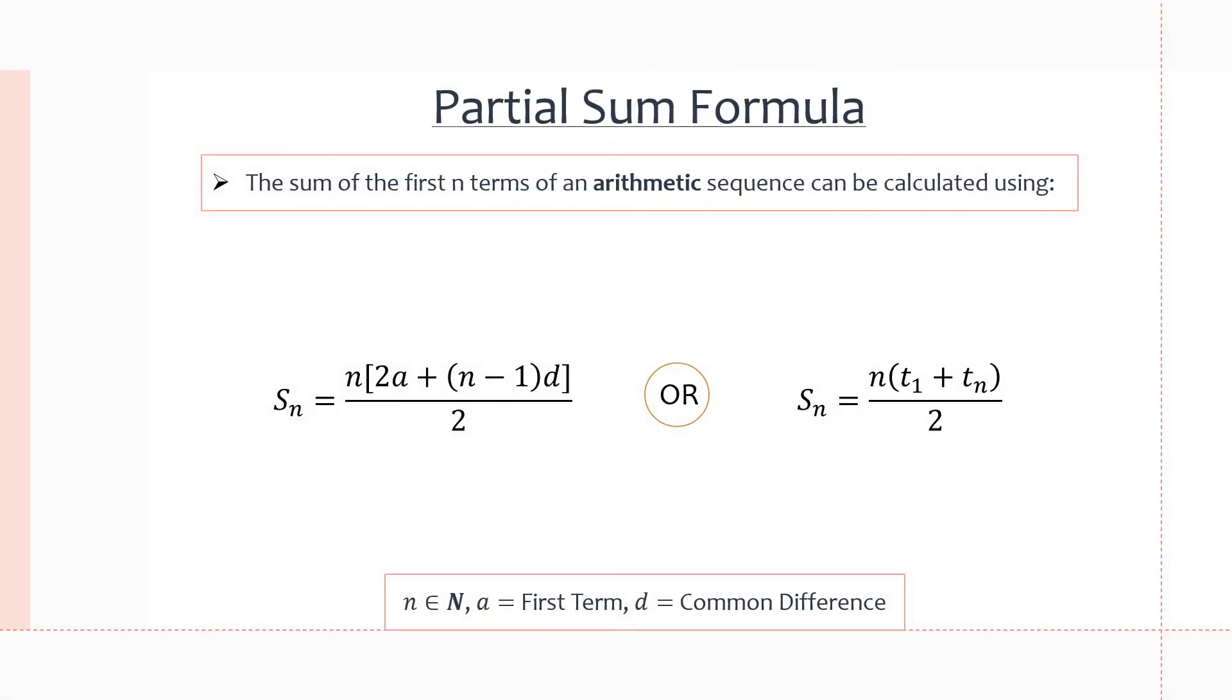Finally, let's take a look at the partial sum formula specifically for arithmetic sequences. So there are two versions to the formula. The first version is S of n, the partial sum to the nth term, equals n, the amount of terms we want to add together, times 2 times a, which is our first term, plus n minus 1 in brackets times d, which is the common difference between each term, all divided by 2.